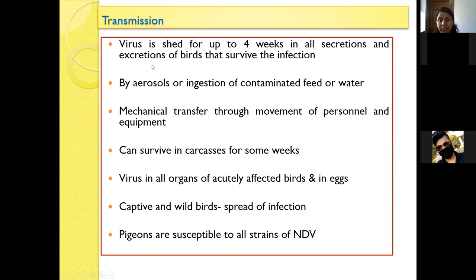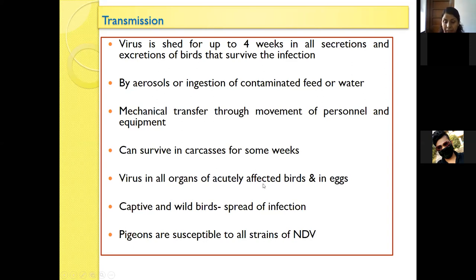Regarding transmission: the virus is shed for up to four weeks in all secretions and excretions of birds that survive the infection. Transmission occurs generally by aerosol or ingestion of contaminated feed and water. Mechanical transfer also occurs through the movement of personnel and equipment. The virus can survive in bird carcasses for some weeks, and is present in all organs of acutely affected birds. Captive and wild birds are also sources of infection. Pigeons are especially susceptible to all strains of Newcastle disease virus.